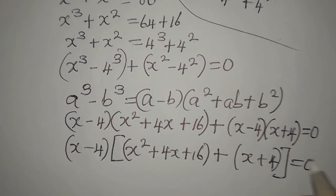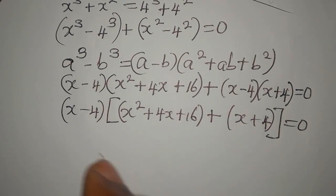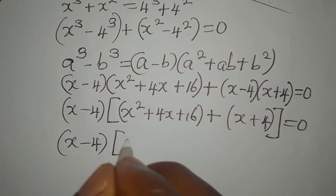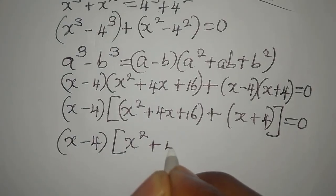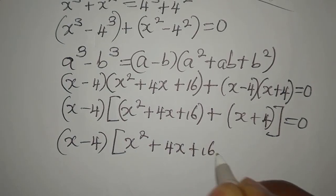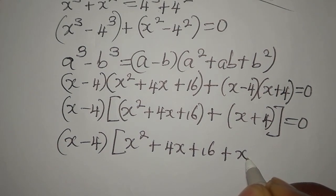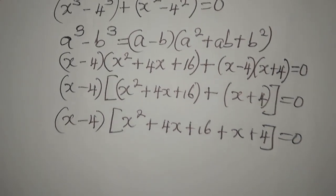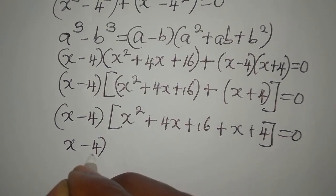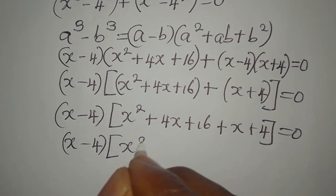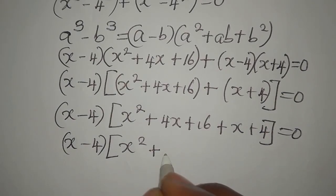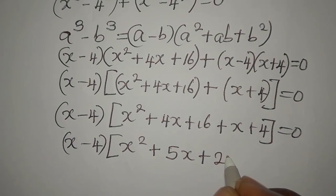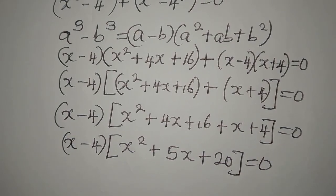We have x minus 4, then equate to zero, so going ahead x minus 4 is here, then we have x² + 4x + 16 plus x plus 4, everything equal to zero. This simplifies to x minus 4 times (x² + 5x + 20) equal to zero.